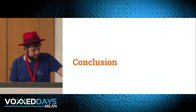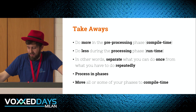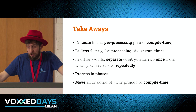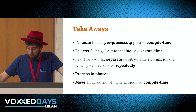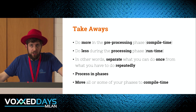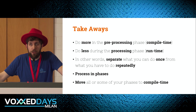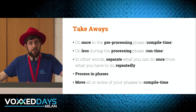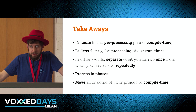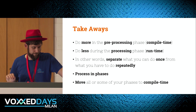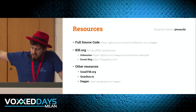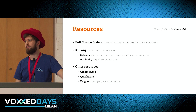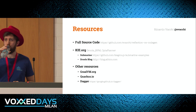Conclusions: do more in your preprocessing phase — that is your compile time — and do less during the processing phase — that is your runtime. Try to separate what you can do once from what you have to do repeatedly. Process in phases, because if you can factor your preparation time into phases, you may be able to move all or some of them to compile time, get better startup performance, and then maybe compile with GraalVM and Quarkus for even better startup time.